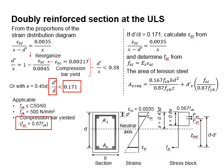the FSC can always be used equals to 0.87 FYK. However, if d prime per d is more than 0.171, that means the compression steel bar has not yielded.